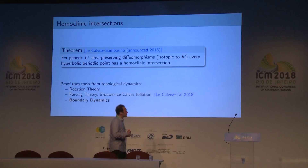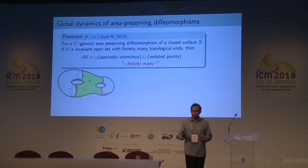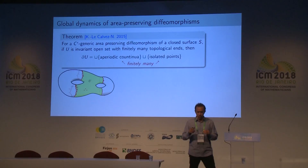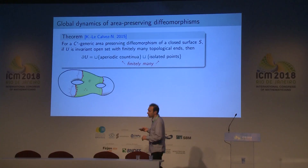An important ingredient in that proof is the boundary dynamics, which is the subject of this talk. The aim is to understand the dynamics on the boundary of invariant open sets. A key result states: if you consider a C-infinity generic area-preserving diffeomorphism, then for any invariant open set with finitely many ends, there is no periodic point on the boundary — with the exception that if the boundary has punctures, those punctures are obviously periodic, but all other non-trivial components are aperiodic.